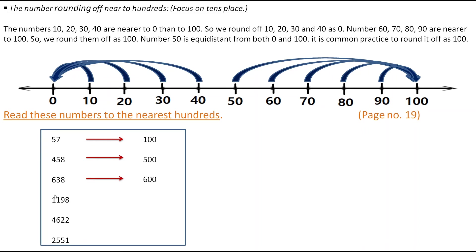The number 1198 has 9 in the tens place, which rounds off to 100, so the hundreds digit 1 becomes 2 — 1198 becomes 1200. The number 4622 has 2 in the tens place, which rounds off to 0, so 4622 becomes 4600. In the last example, 2551 has 5 in the tens place, so the hundreds digit increases by 1 — 2551 becomes 2600.